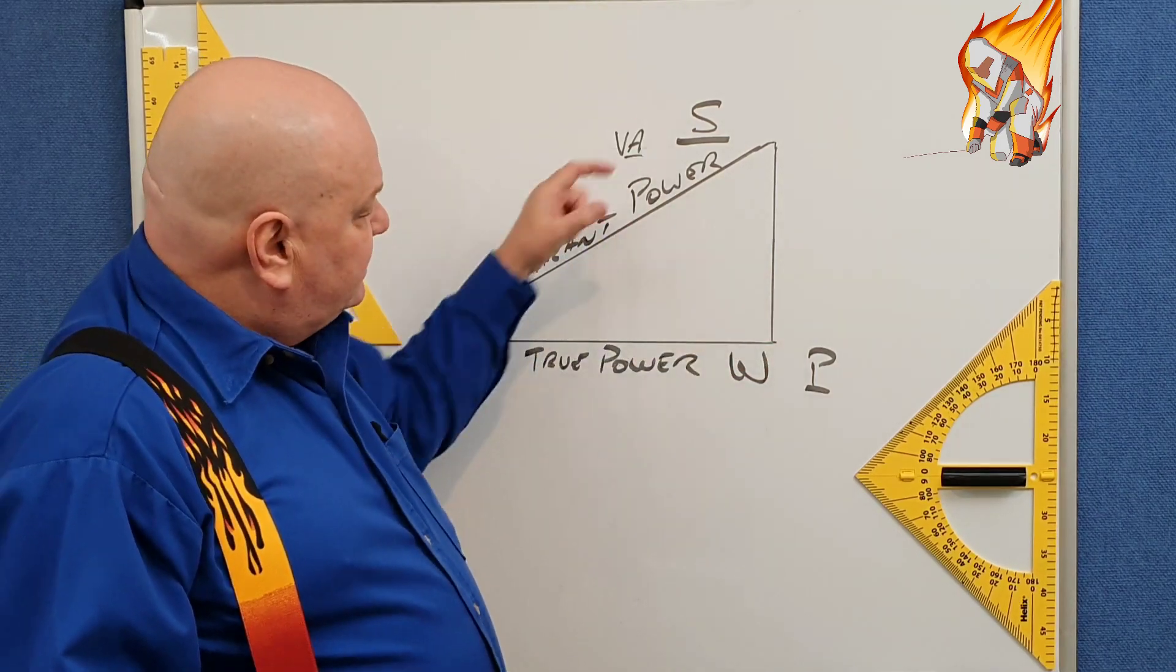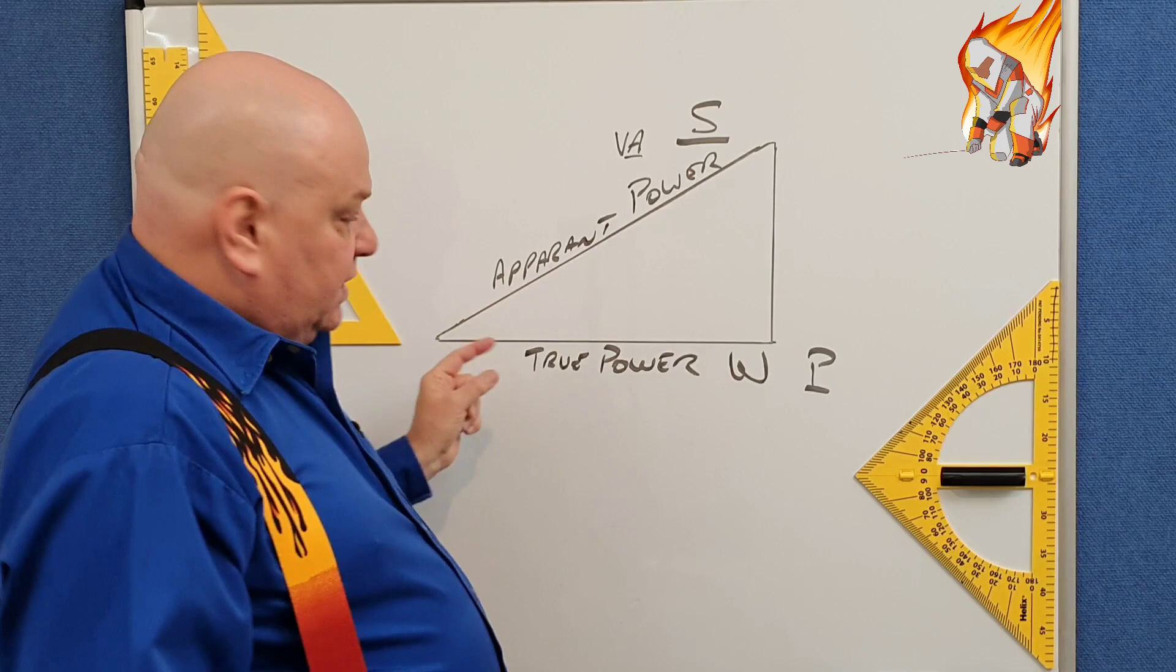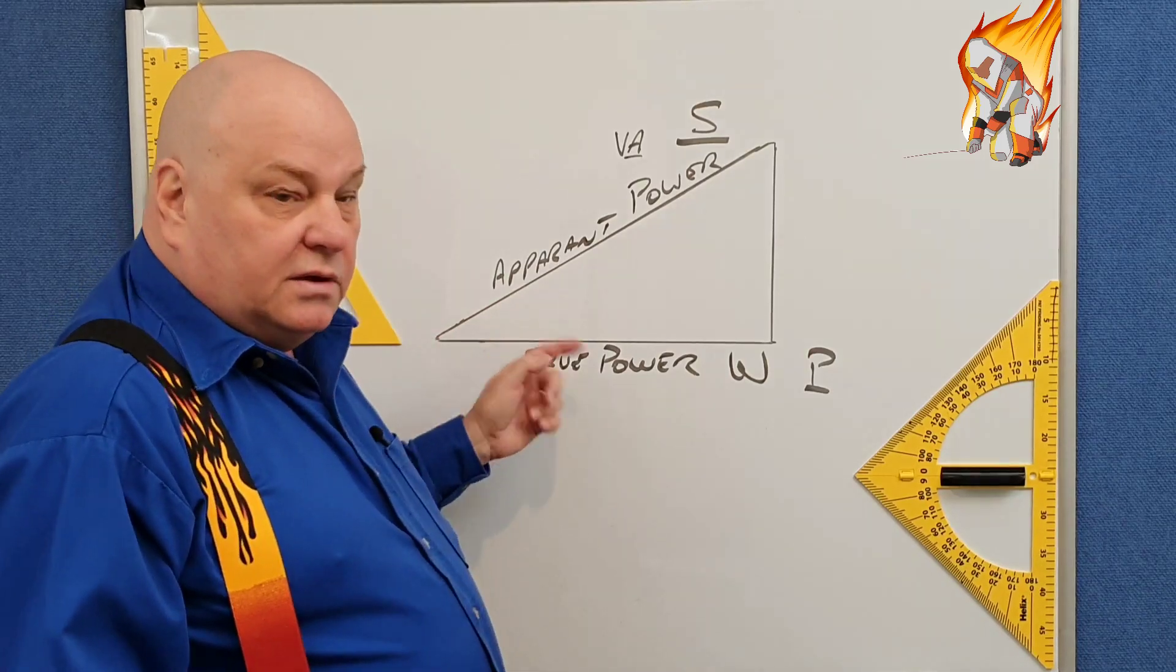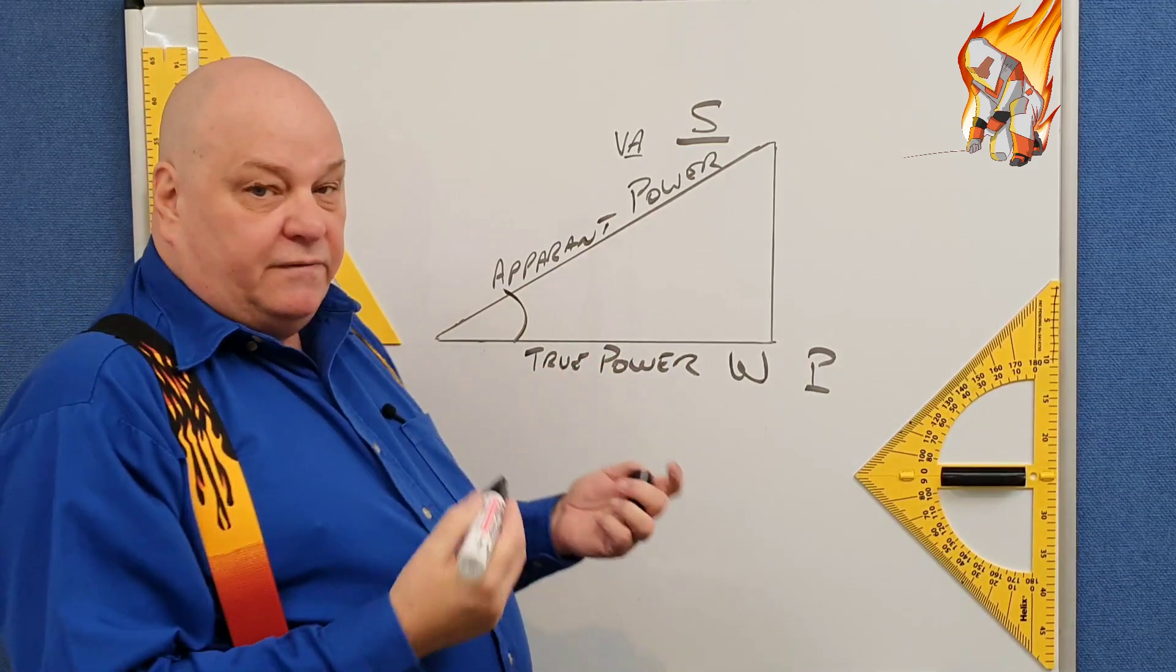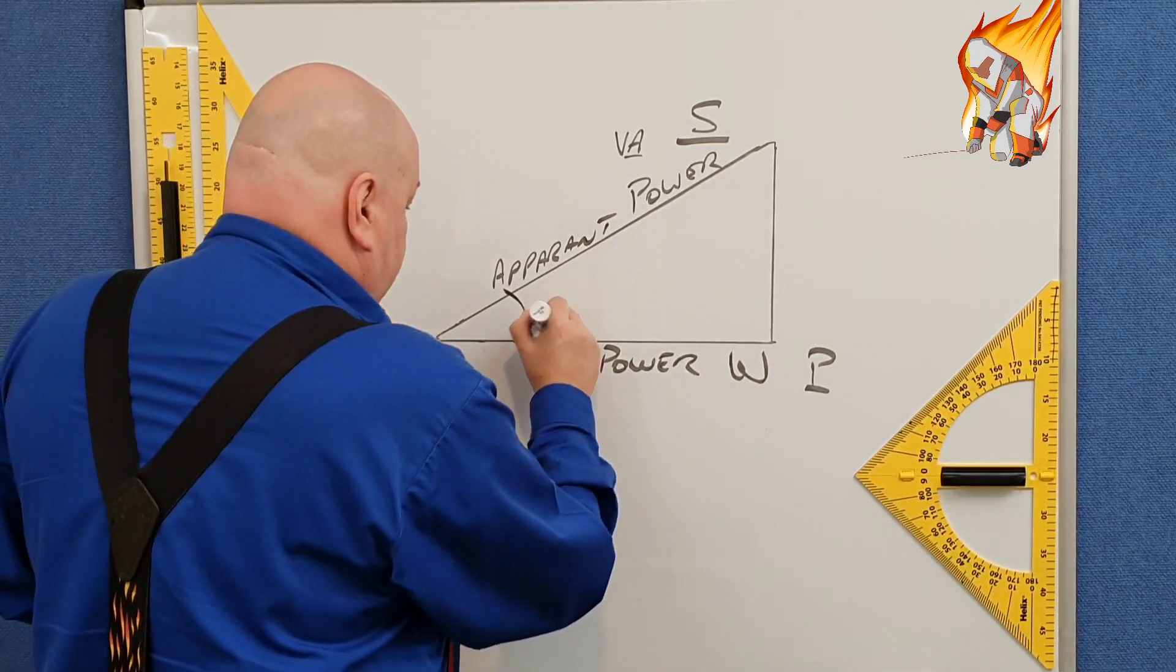So what makes this different is this angle here. And that angle is our power factor, that's your cos theta.